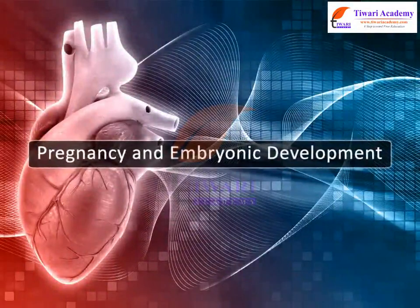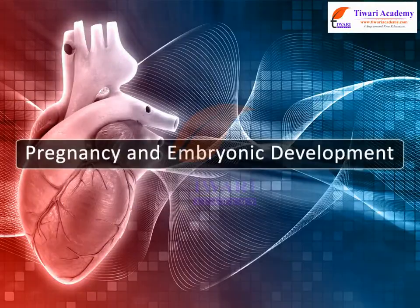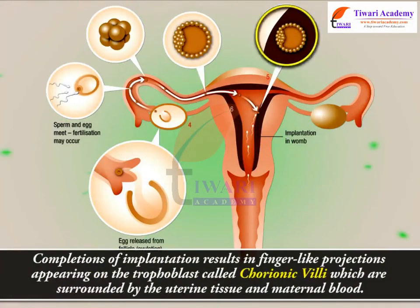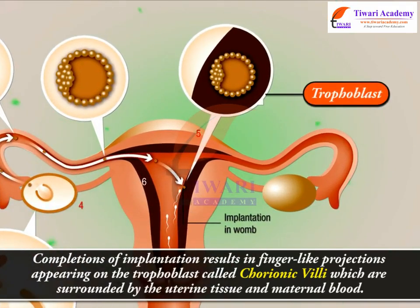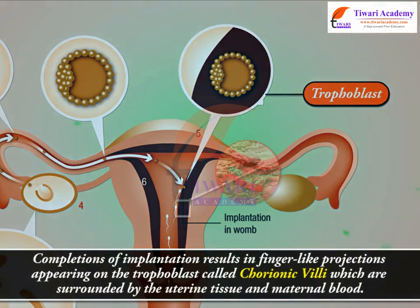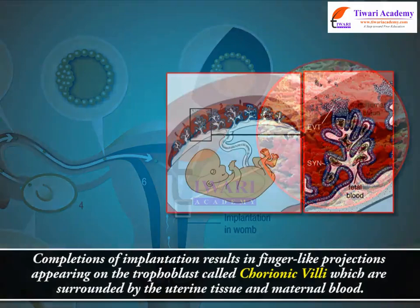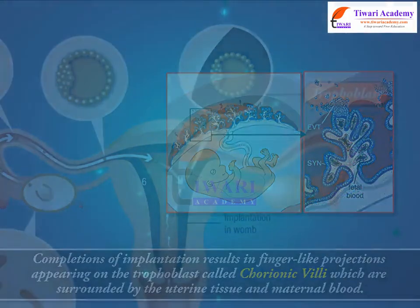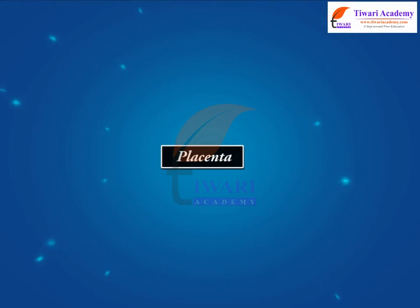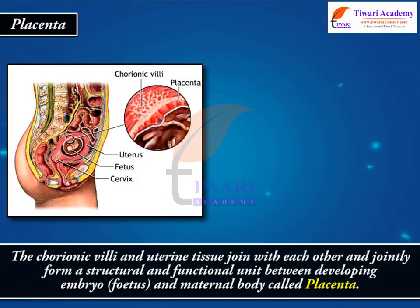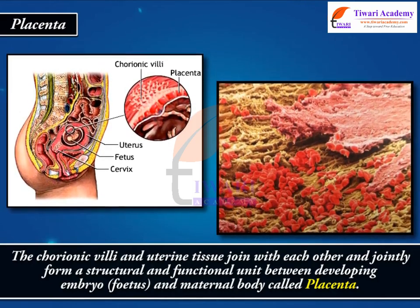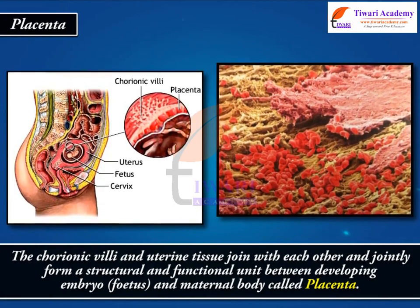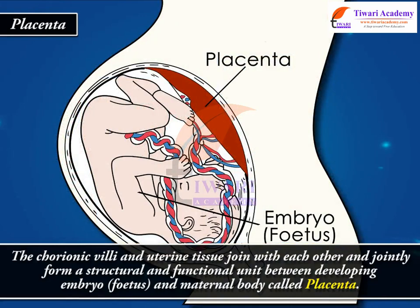Pregnancy and embryonic development. Completion of implantation results in finger-like projections appearing on the trophoblast called chorionic villi, which are surrounded by uterine tissues and maternal blood. The chorionic villi and uterine tissue join with each other and jointly form a structural and functional unit between the developing embryo, fetus, and maternal body called the placenta.